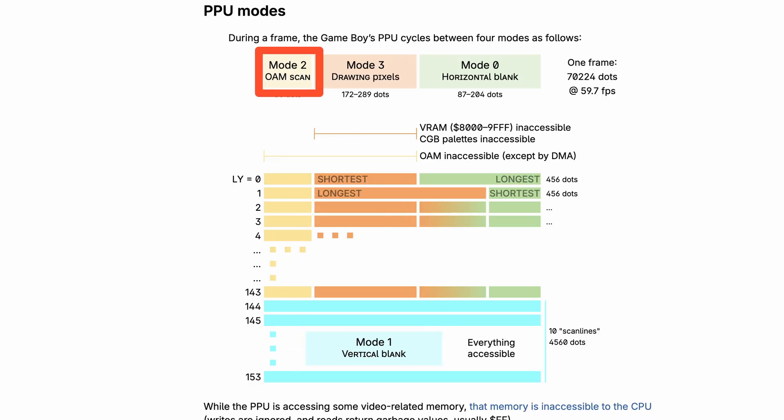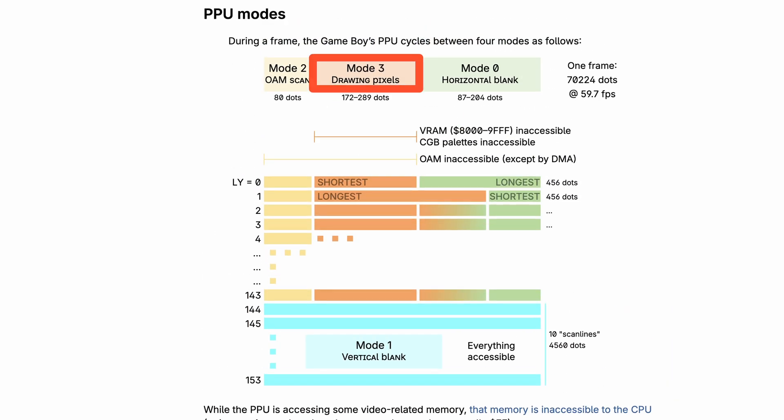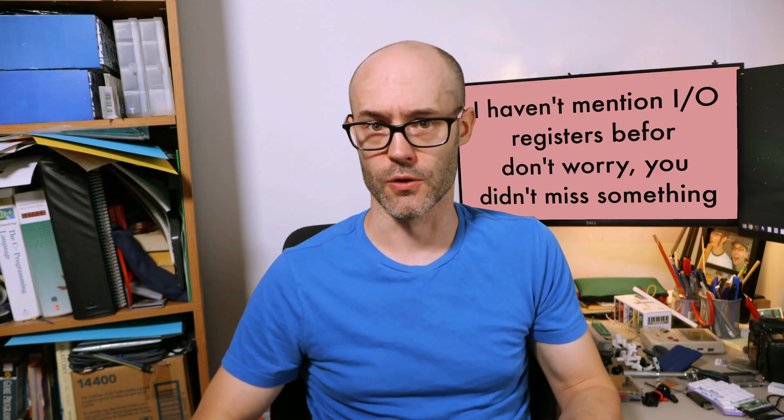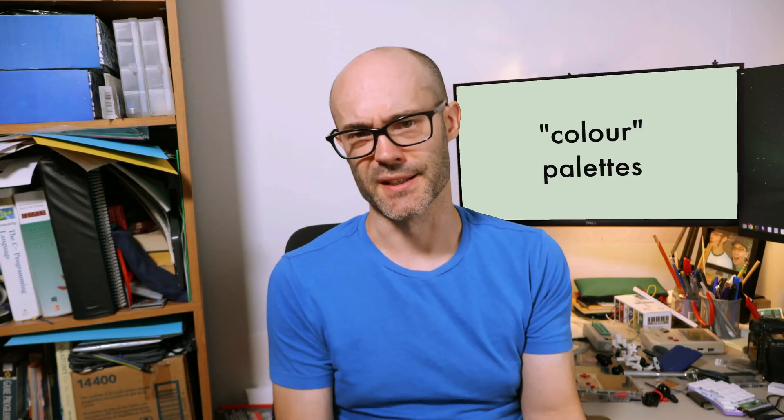There's also mode 2, which is OAM search. OAM search happens just before the start of a line, and most of VideoRAM is accessible by the CPU, except object attribute memory. Mode 3 is the last mode — it's where the line is actually being drawn, and where VideoRAM and OAM can't be accessed by the CPU at all. The graphics system also has a bunch of IO registers to control things like turning the display on and off, turning layers on and off, moving layers around, changing the color palettes, and various other things. There's a lot I didn't mention, like that mode 0 and mode 3 can vary in length depending on what's being drawn — a trick that wouldn't be possible on a home console with a CRT.